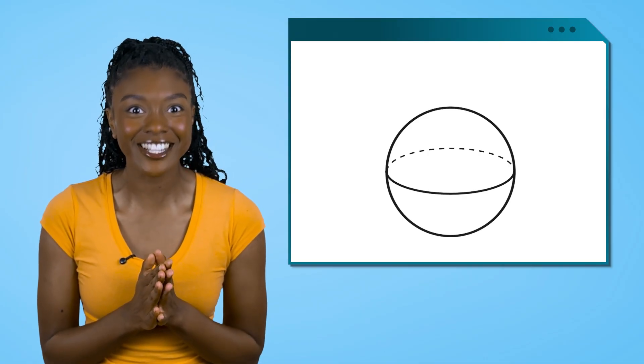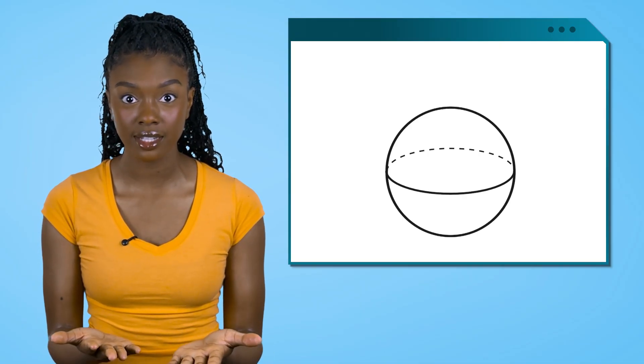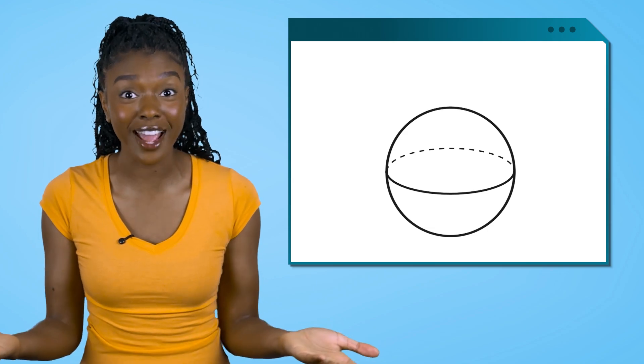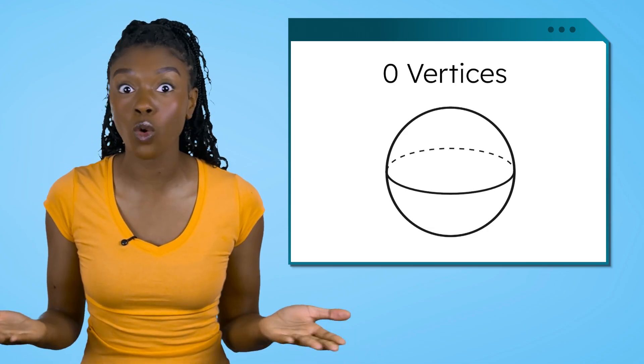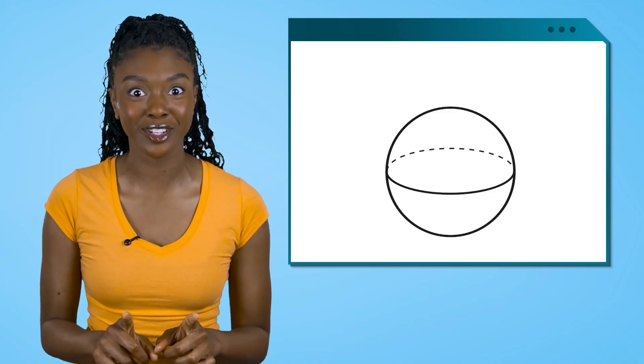We're so close! Let's check for the last feature. Are there any vertices? You're right! There are no vertices or corners on the sphere. This is definitely the shape we're looking for.